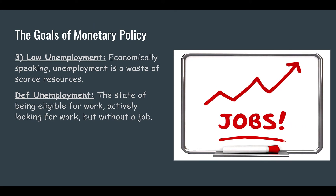The third goal is low unemployment. Economically speaking, unemployment is a waste of scarce resources — everybody has something to add. If we could find a way to get people that are looking for a job, seeking a job, eligible for work into employment, we would all benefit from increased production and consumption in society. Unemployment is the state of being eligible for work, actively looking for work, but without a job — and that is a waste of scarce resources.